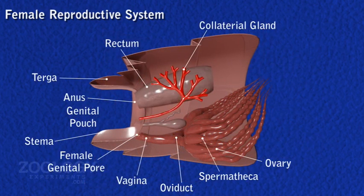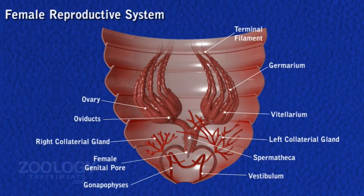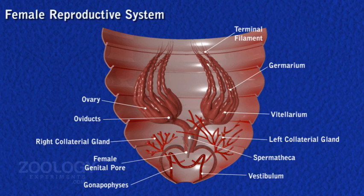A pair of highly branched accessory or collateral glands lies behind and above the ovaries. The left gland is opaque and more developed, while the right one is transparent and less developed. The two open into the genital pouch through two separate openings. They lie close together, a little behind and above the spermathecal opening. The secretion of the collateral gland forms a hard egg case or ootheca around groups of eggs.